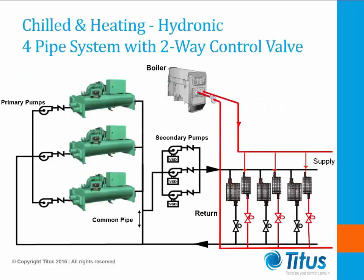A four-pipe system includes a distribution system containing both hot water supply and return lines, as well as chilled water supply and return lines. A four-pipe fan coil could technically be heating one minute or cooling the next — the control valve and thermostat set point decide when to cool and when to heat. The clear advantage is each zone or fan coil can be heating or cooling as required, independently of neighboring zones. Note that two-way valves on all units also require a secondary pumping system.